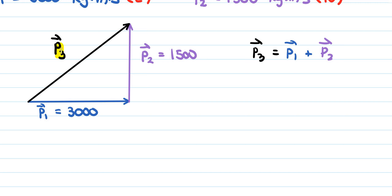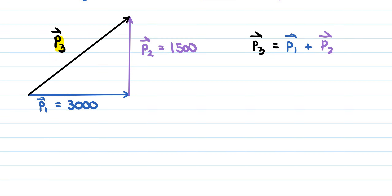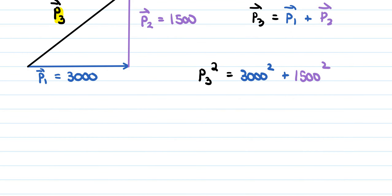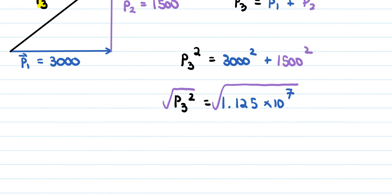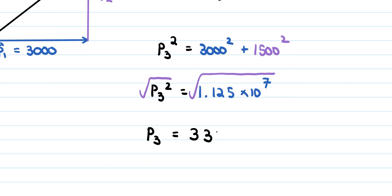We want to find the magnitude of the combined momentum using the Pythagorean theorem. P3² equals 3000² plus 1500², which gives 1.125 times 10 to the power of 7. Taking the square root of both sides gives us the combined momentum P3 equal to 3354.102 kilogram·meters per second.